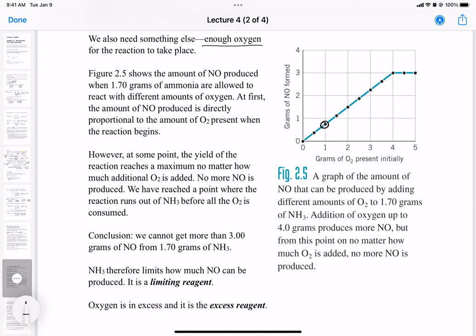And that's what determines how much yield we get or how much product we can get out of this reaction given the initial conditions. The conclusion is we cannot get more than three grams of NO from 1.70 grams of ammonia. So this point here represents 3.0 grams of nitrogen oxide.